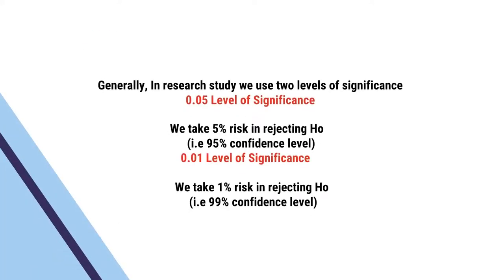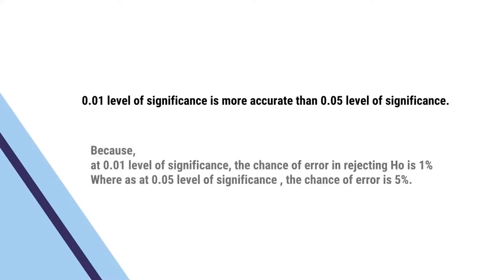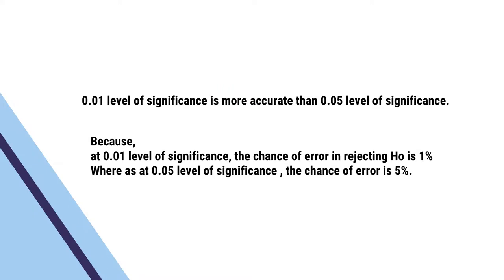Generally in research studies, we use two levels of significance. One is 0.05 level of significance, where we take 5% risk in rejecting the null hypothesis — we call it 95% confidence level. Second is 0.01 level of significance, where we take 1% risk in rejecting the null hypothesis — we call it 99% confidence level.